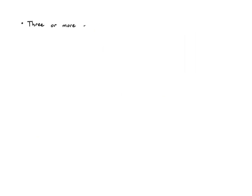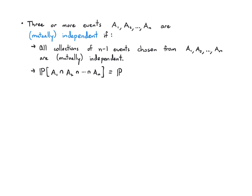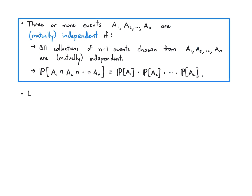What about three or more events? Events A1, A2, …, An are mutually independent if two conditions hold: first, all collections of n−1 events chosen from A1 through An must be independent; and second, the probability of the full intersection must equal the product of all the individual probabilities. This is a recursive definition — you keep going down until you reach pairs and just check products.